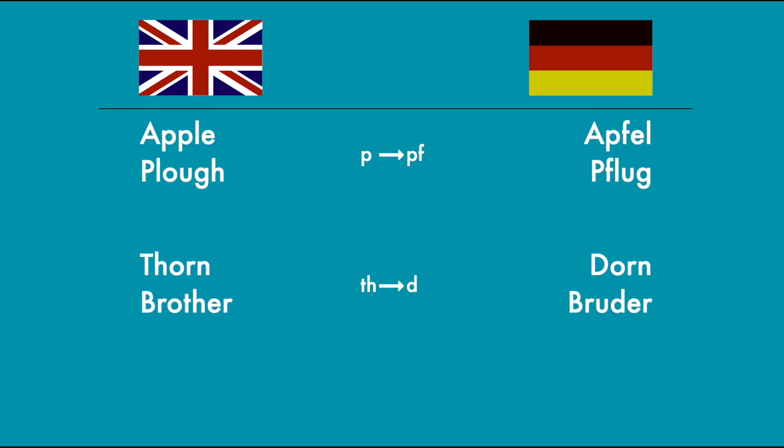Something very similar has happened with the Semitic language family. Hebrew, Aramaic, and Arabic are all related, and just like with German and English, there are patterns for how sounds in one language relate to another. Yet there are some Arabic words that stick out — these words do not follow the same patterns for sound shifts that we would expect. Something strange must have been going on there.